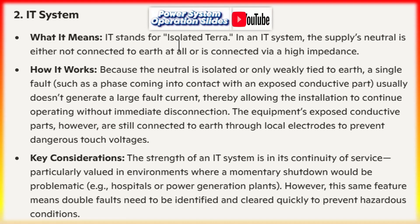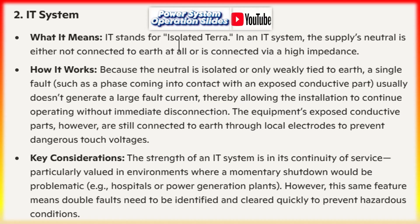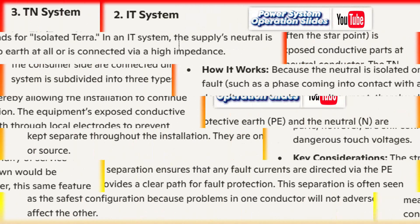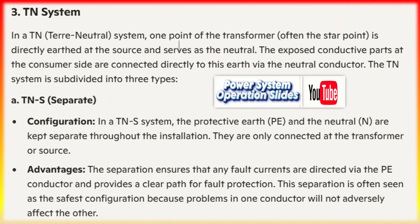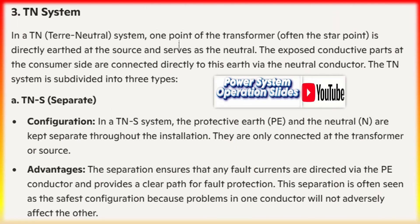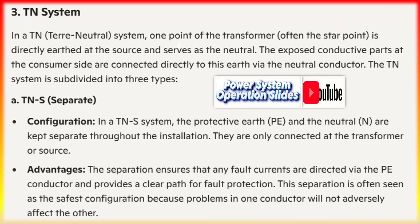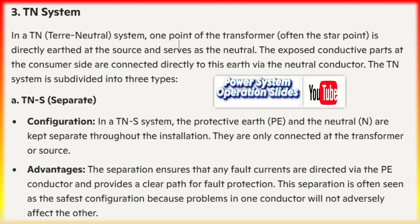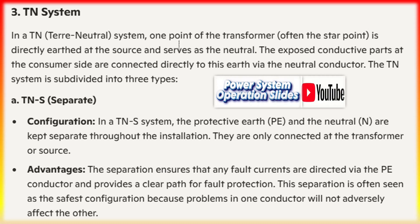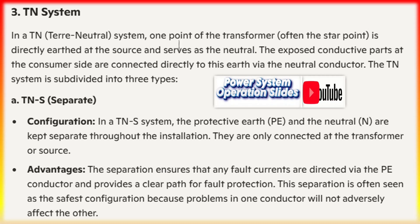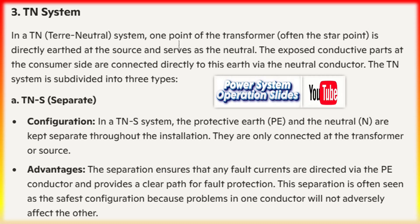Key considerations: the strength of an IT system is in its continuity of service, particularly valued in environments where a momentary shutdown would be problematic — for example, hospitals or power generation plants. However, this same feature means double faults need to be identified and cleared quickly to prevent hazardous conditions.